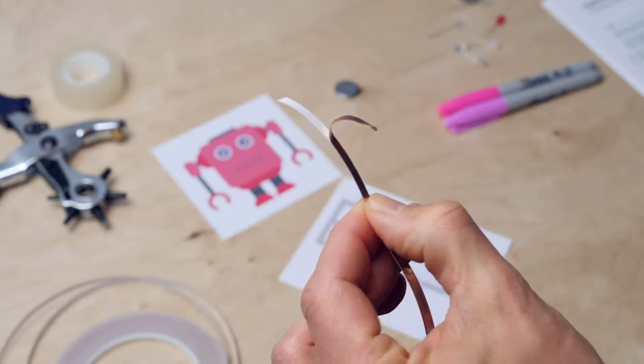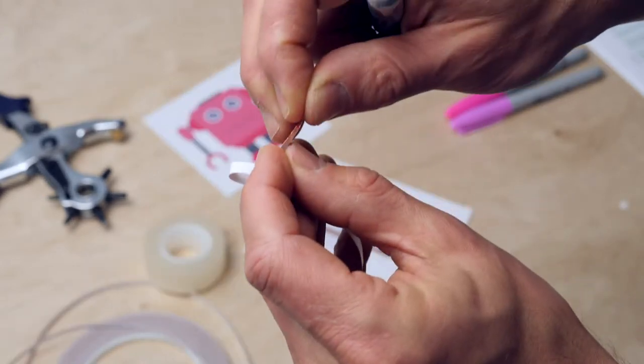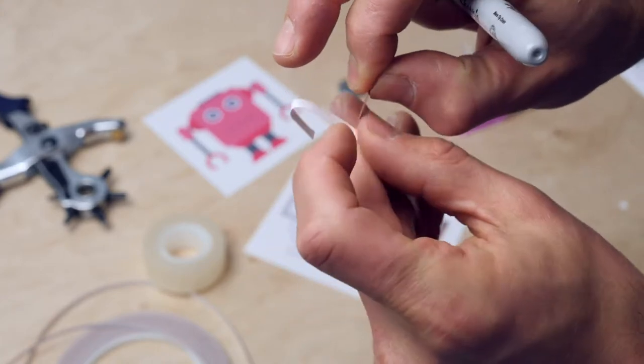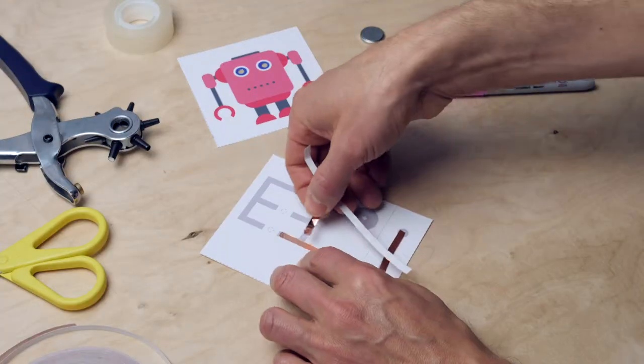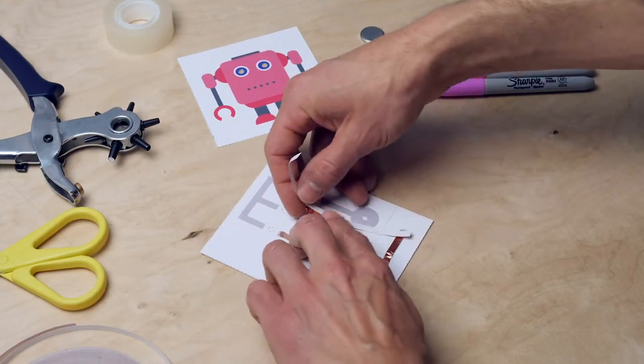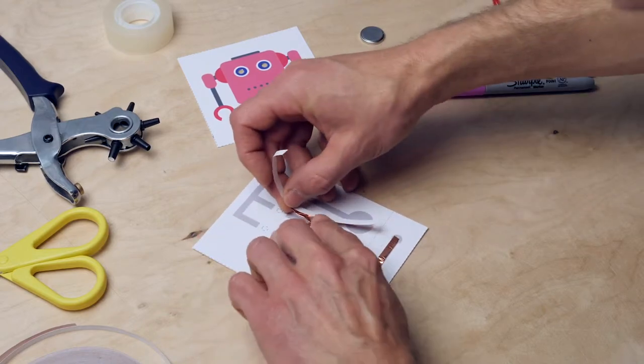To make it possible for the current to flow through the circuit, I fold the end and attach it with a piece of tape to the copper tape that I have attached before. This allows me to make all kinds of intricate forms.